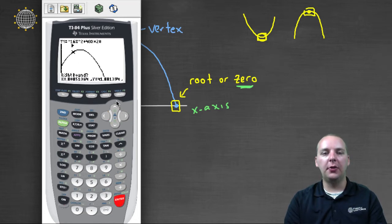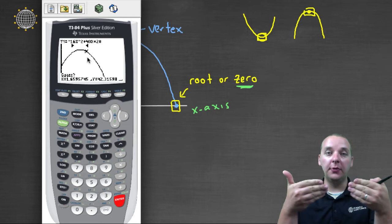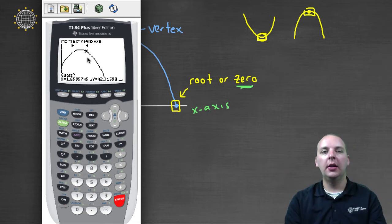Then it'll ask you for a right bound. Slide that thing to the right, until it's well past the vertex. And then you see it gave you two little arrows. And your maximum, your vertex, should be between those arrows.